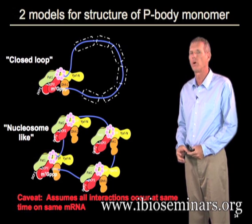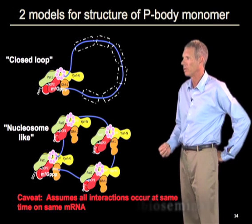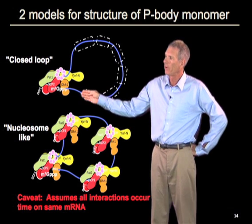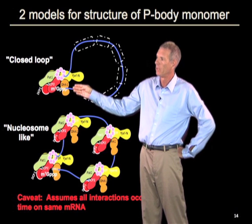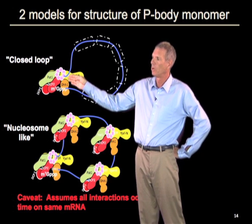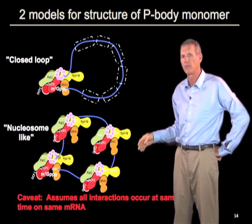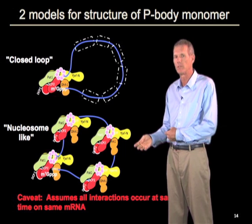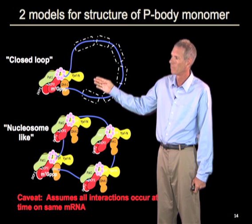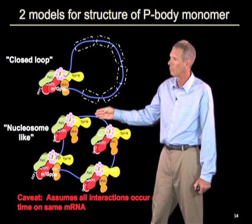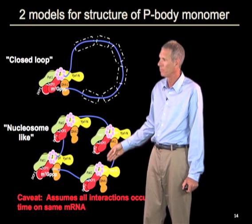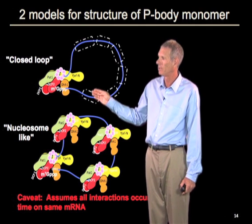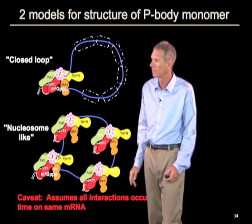We don't yet know how those come together to form the definitive complex, but we currently have two models. One is the closed loop model, where the 5' and 3' ends of the RNA are brought together by protein-protein interactions, with core components preferentially bound to the cap or the 3' end of the mRNA — analogous to translation complexes where cap and poly-A tail are brought together to promote ribosome loading. The other model is a nucleosome-like, or beads-on-a-string model, where the core complex is found in multiple places on the RNA, coating it with different proteins. Current experiments are directed at determining which of these complexes actually forms on the RNA.